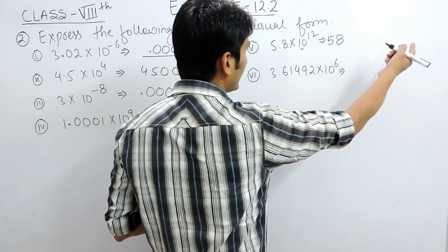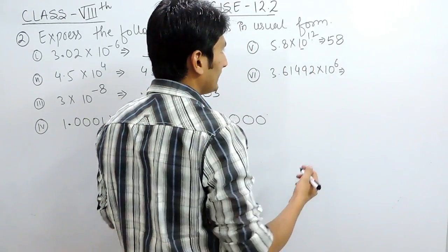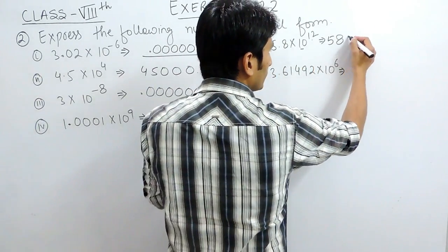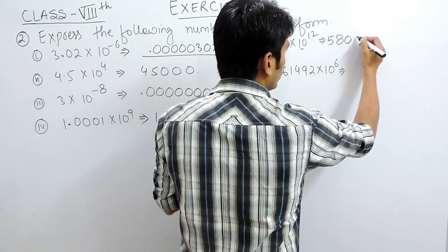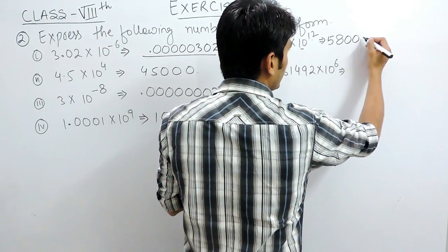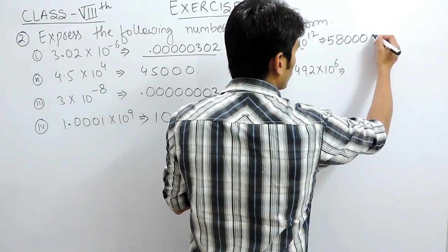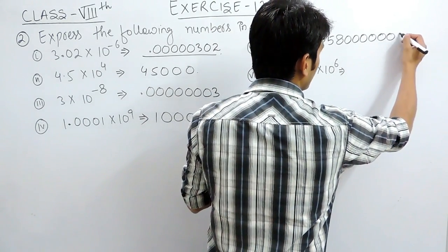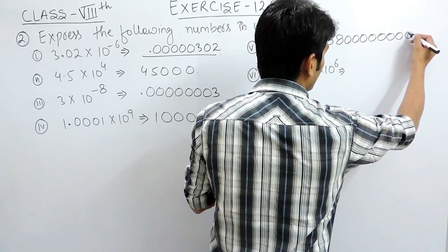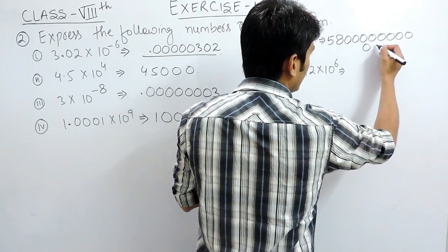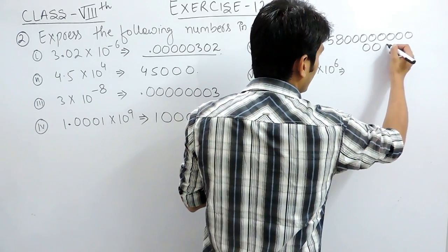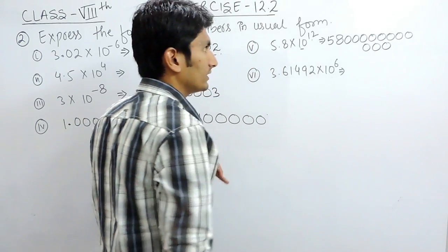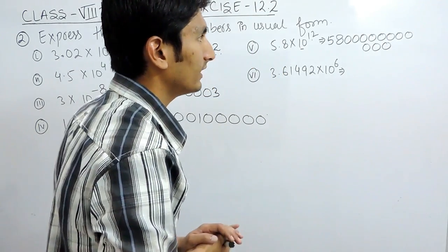Shifting the decimal to the right till 8 digits: 1, 2, 3, 4, 5, 6, 7, 8 — and continuing — 9, 10, 11, 12. So this would be the number.